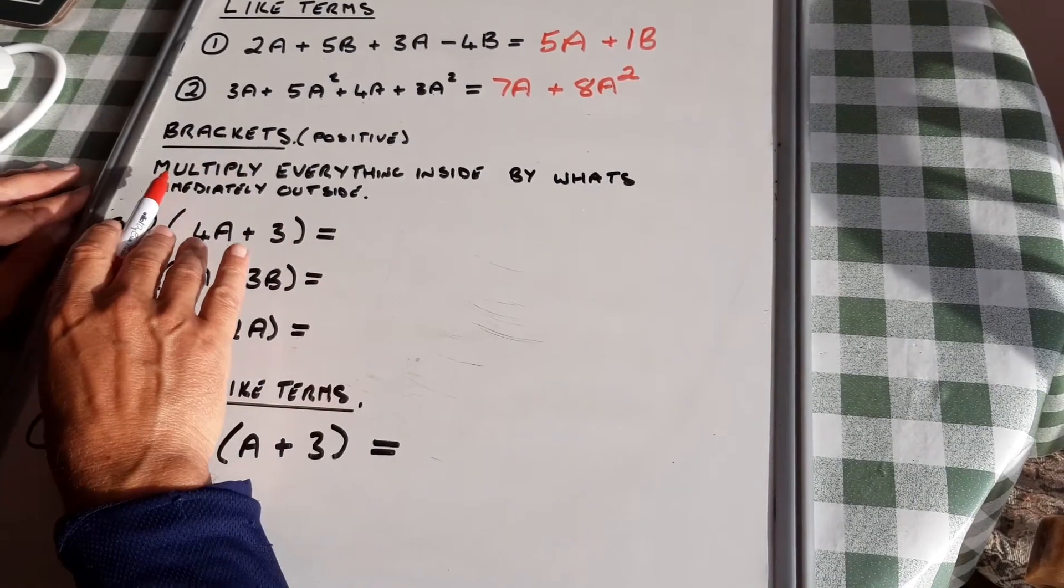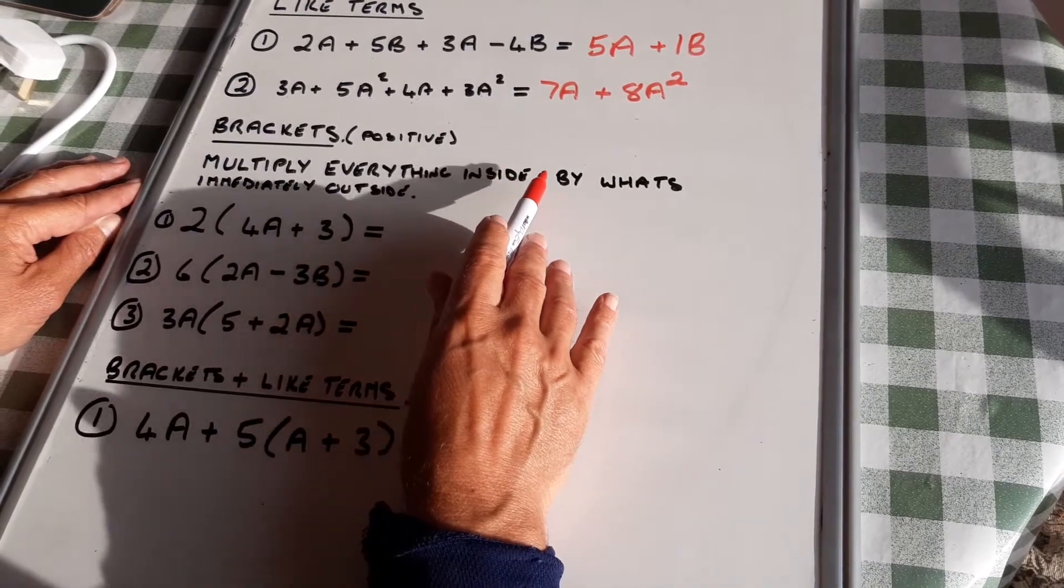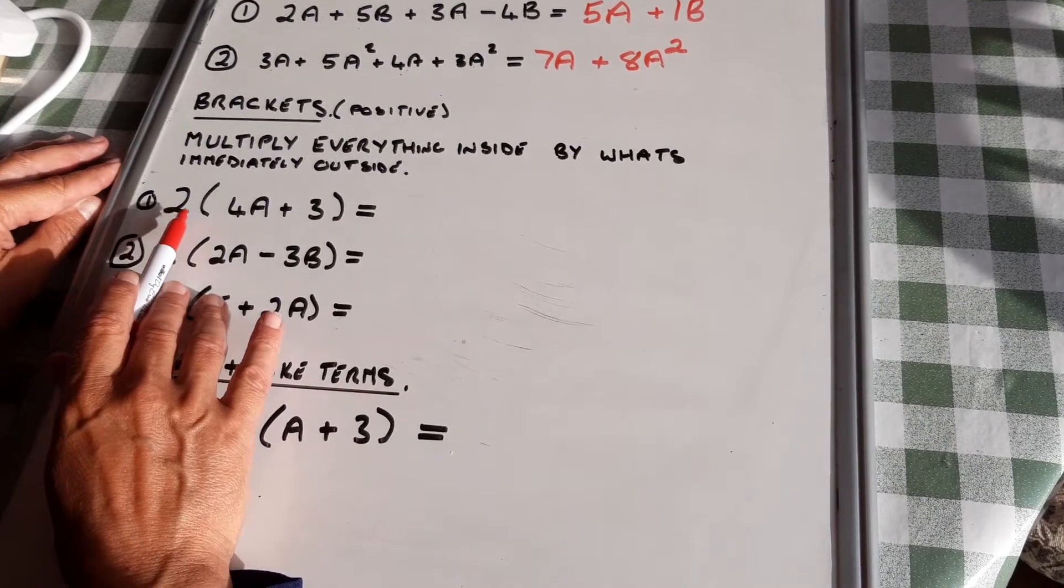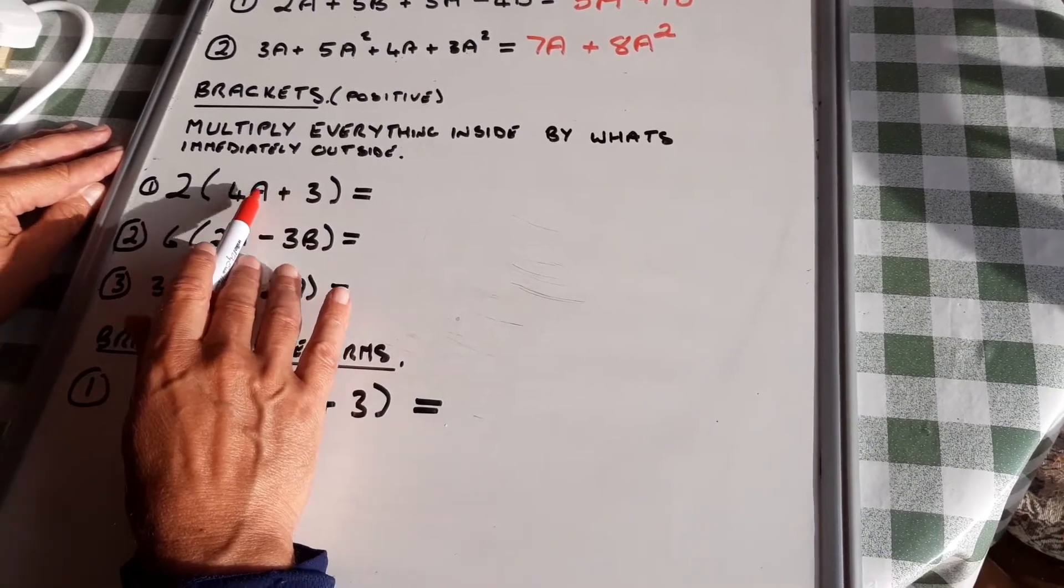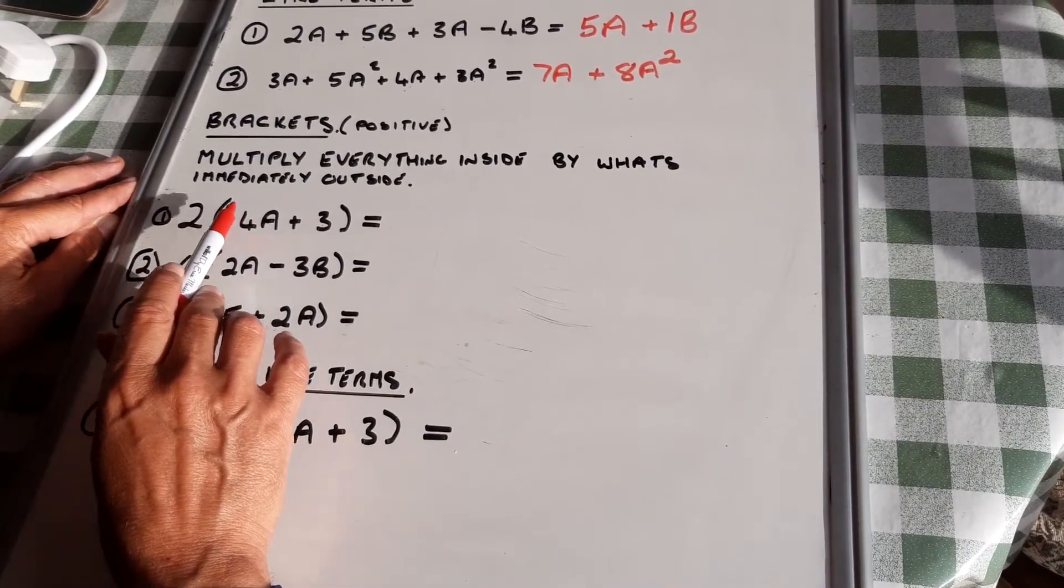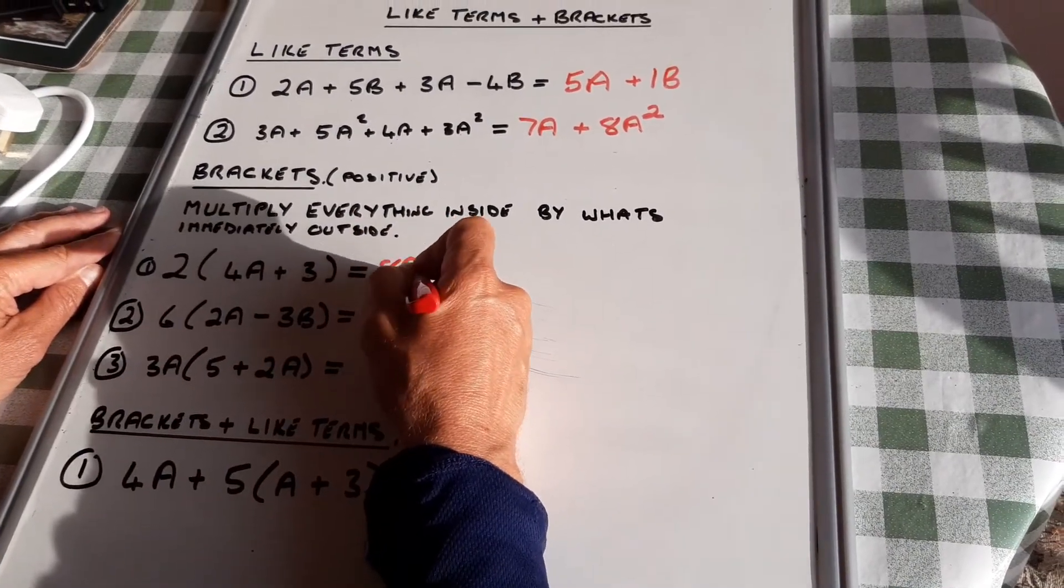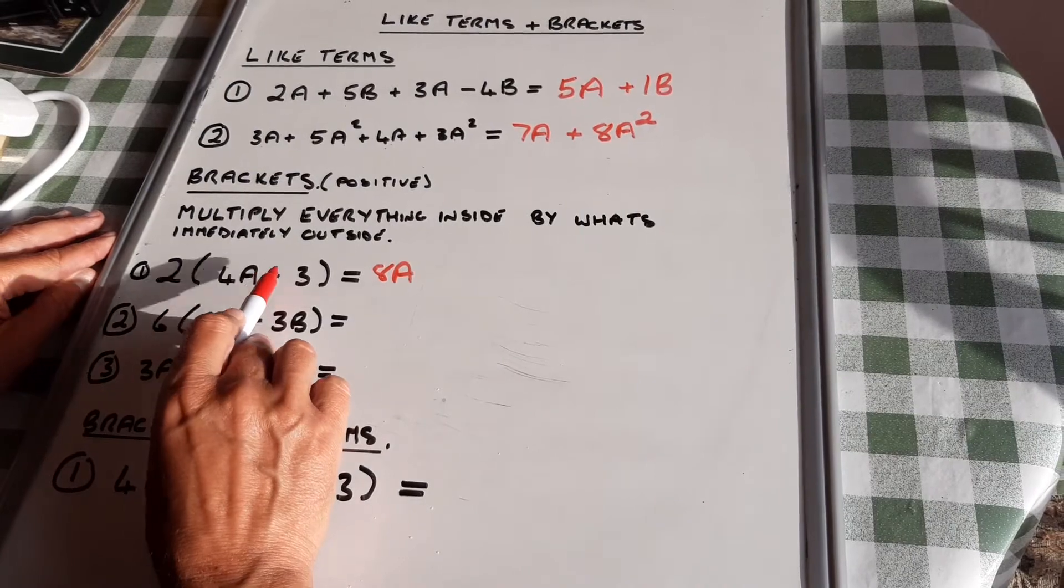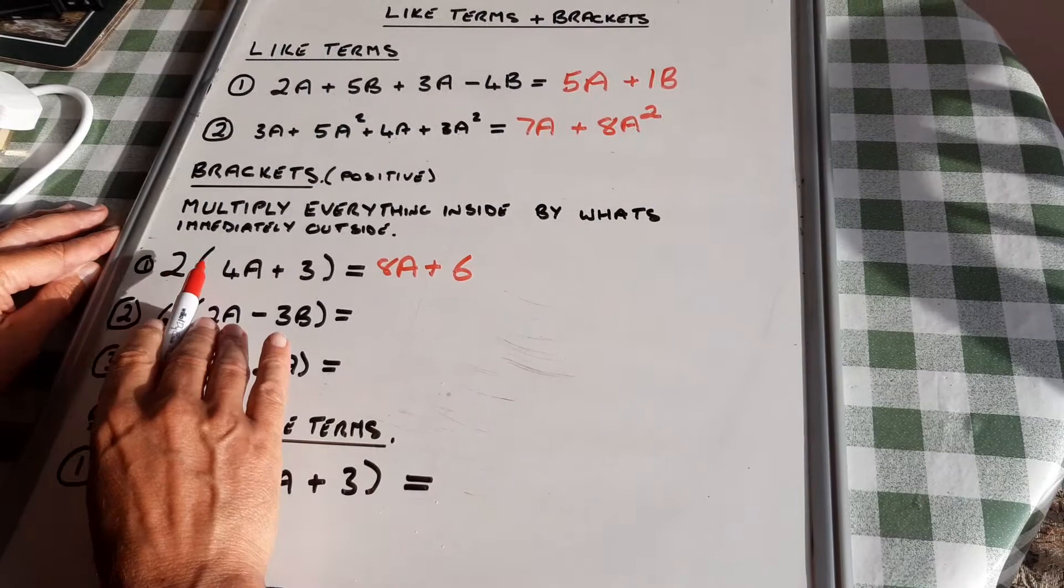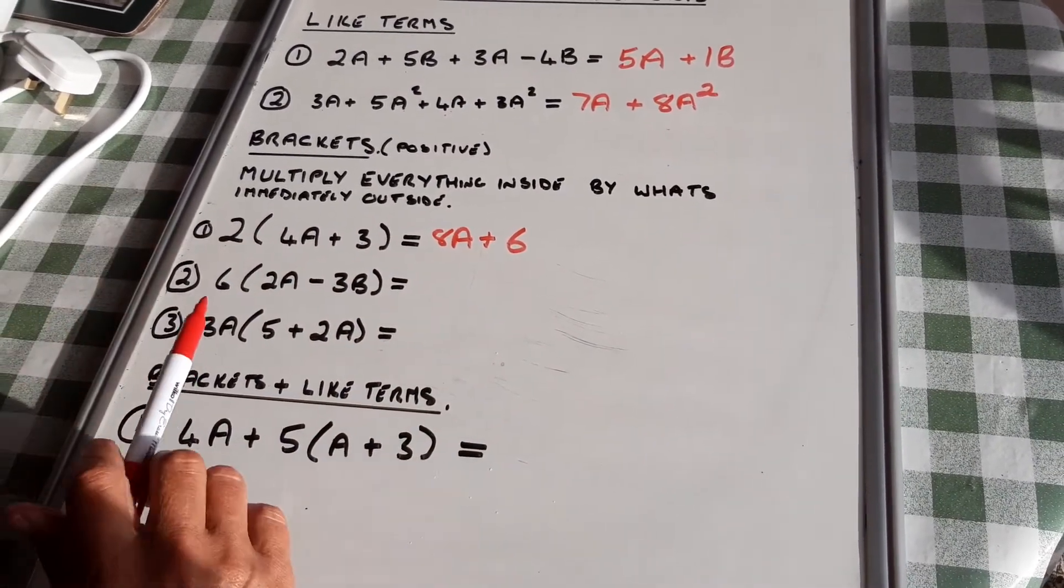Brackets. You multiply everything inside the bracket by what's immediately outside. So I need to multiply both the 4a and the 3 by the 2. 2 lots of 4a is 8a, 2 lots of 3 is 6. I've multiplied both parts by 2.